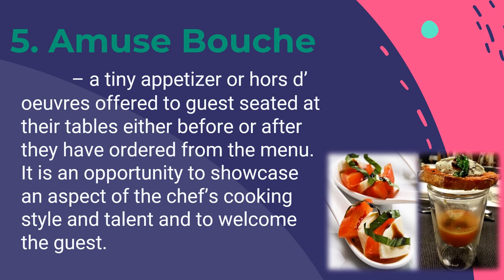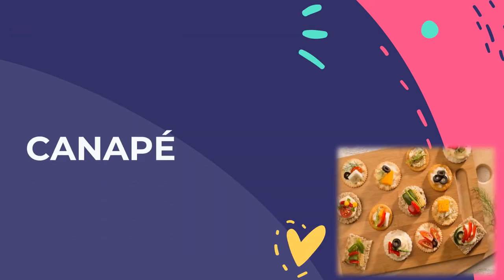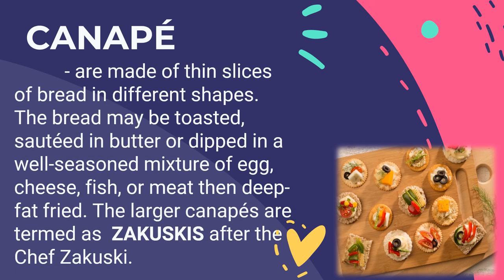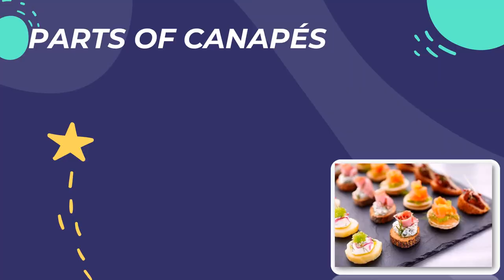Another classification of appetizers is canapés — made of thin slices of bread in different shapes. The bread may be toasted, sautéed in butter, or dipped in a well-seasoned mixture of egg, cheese, fish, or meat, then pan-fried. Canapés consist of three parts: a base, a spread or topping, and a garnish. They can be served hot or cold. There are no set recipes, and you may create your own combination on cut pieces of bread, toasted pastry, biscuits, and others.